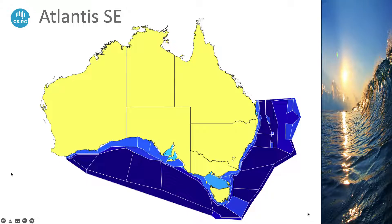A lot of the work that I've personally been involved in linking Atlantis with stock assessments has revolved around a big model in the southeast of Australia called Atlantis Southeast or Atlantis Catch Cost Risk — Atlantis SE or Atlantis CCR. It has 71 odd boxes, five or six depth layers, and covers about 3.1 million square kilometres of the Australian southeast ecosystems.